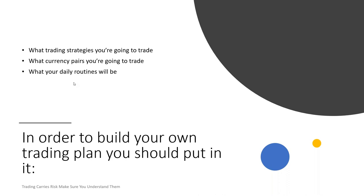Today, you can be trading Bitcoin at 11 o'clock, the euro at 12, Google at 1, Apple at 2, the FTSE at 3, gold and crude oil by 4 or 5. It's not necessarily a bad thing to move across markets, but the fact is you cannot be a master of all of those things.